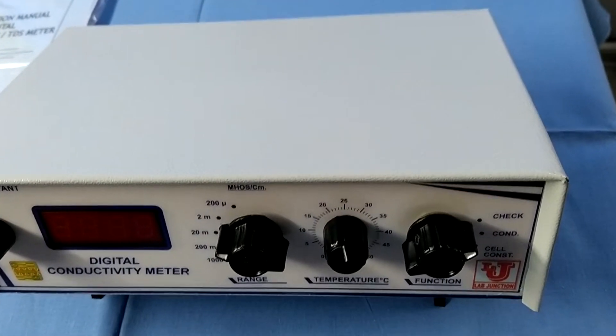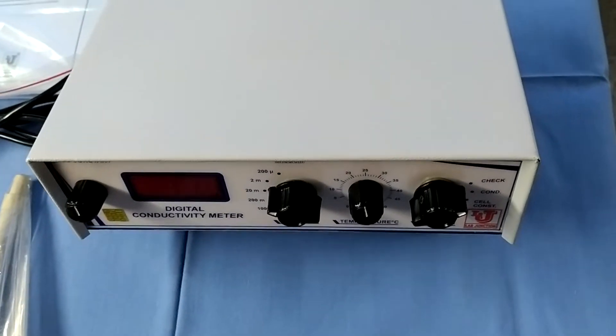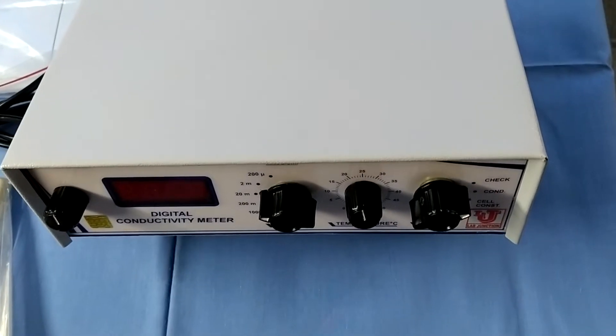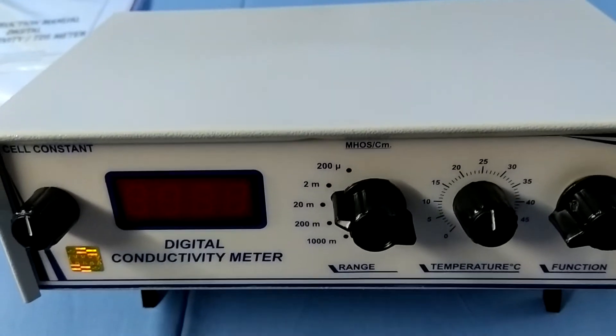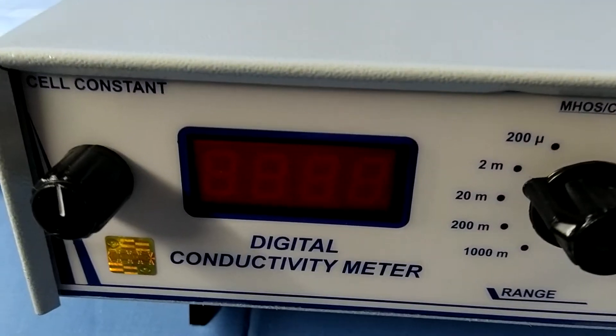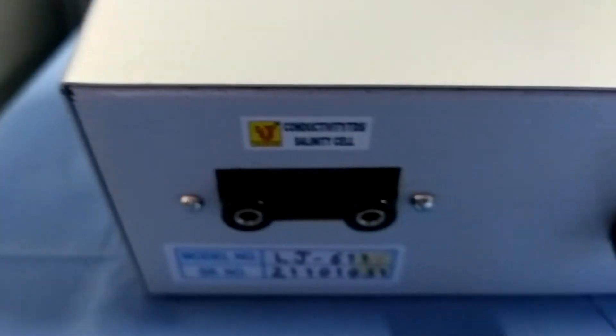Now, how to use Digital Conductivity Meter? This is our main machine of Digital Conductivity Meter. This is the front view, side views, back views, again side view.